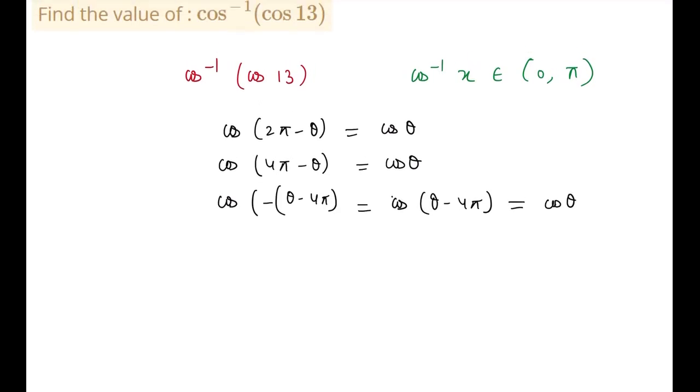And if I write my this term as 13 minus 4π, this will come out to be approximately 13 minus 12.43 something. And this will come out to be something in points, I can say 0.5 something. I think it is clear up to here. And this point something will lie between 0 to π.